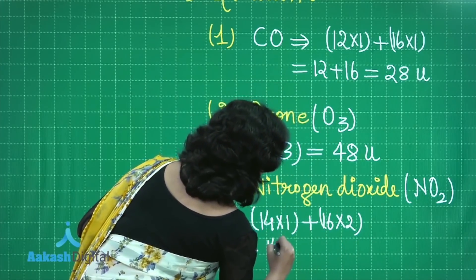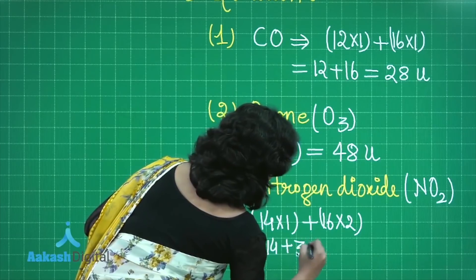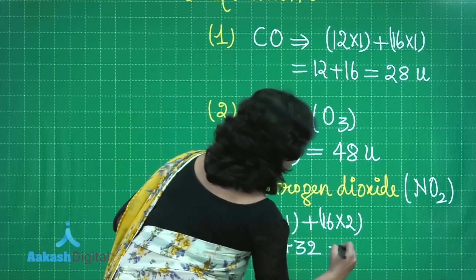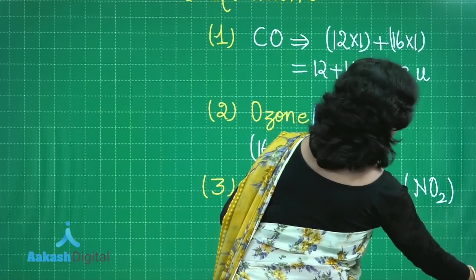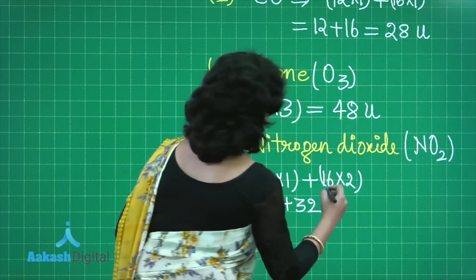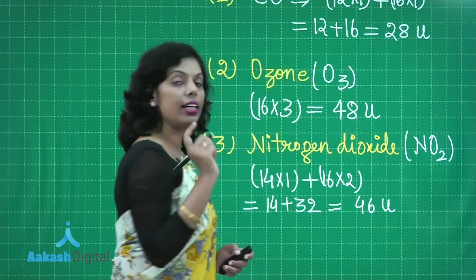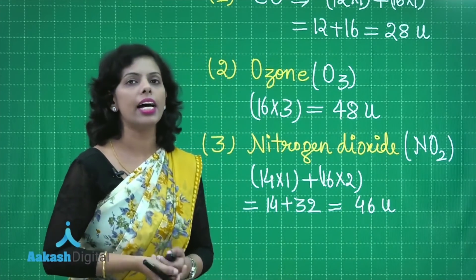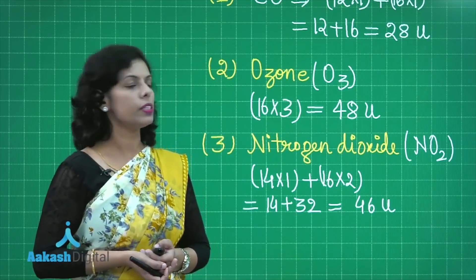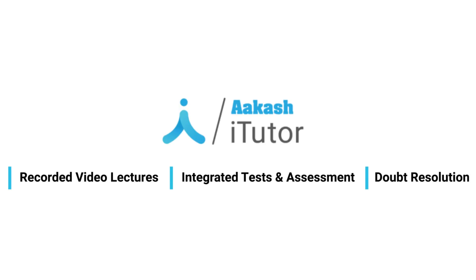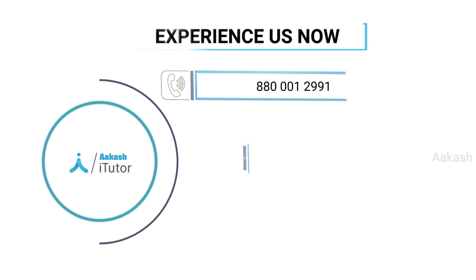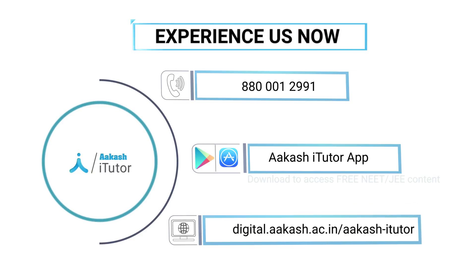This is 14 plus 32. So if you add these two you will get the final value and that would be 46u. So it is the atomic mass of nitrogen dioxide. And what about the gram molecular mass of this? This is 46 gram.